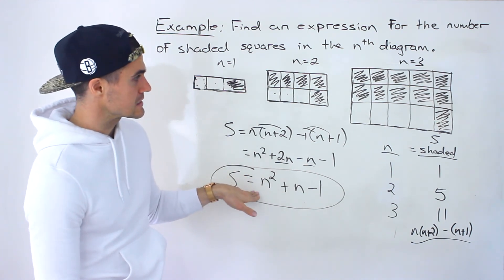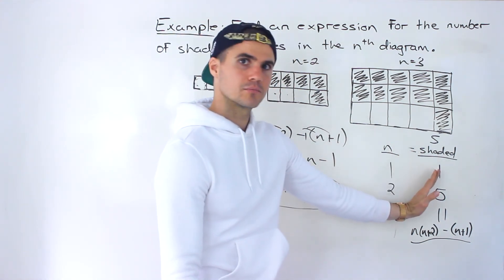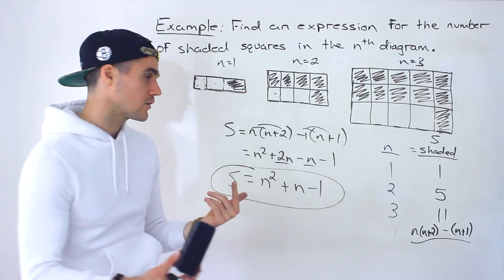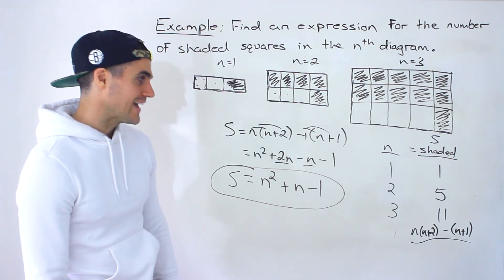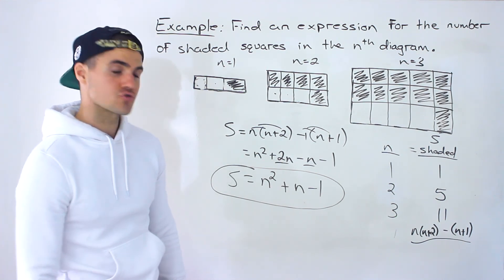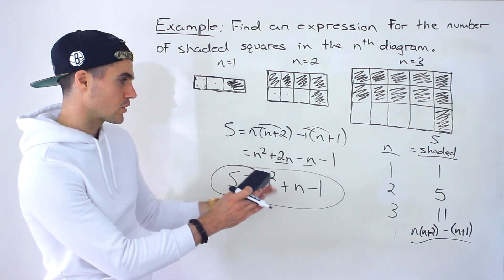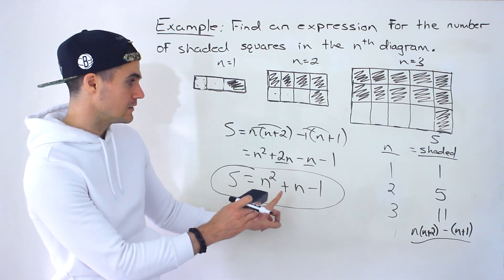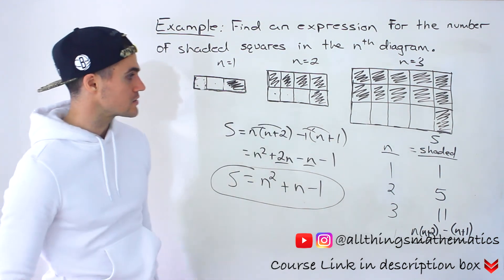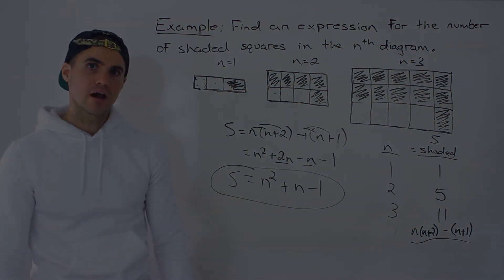Notice how going directly from the diagram number to the shaded squares would be quite difficult — it would take trial and error and you might not get it. I recommend breaking the problem into intermediate columns: relate n to the length, width, then multiply for the area, find the unshaded expression, and combine everything. That systematic approach is the most reliable route to the final answer.